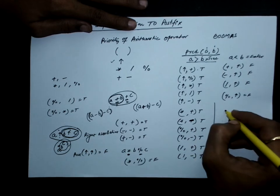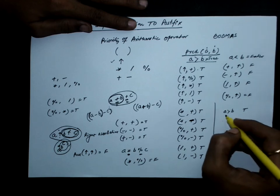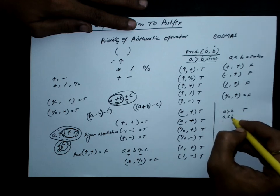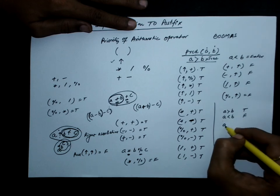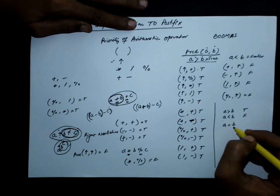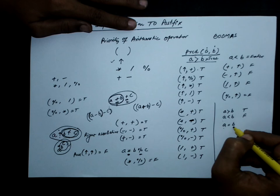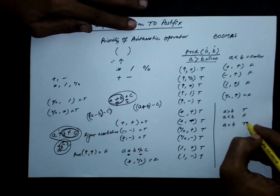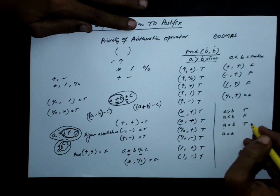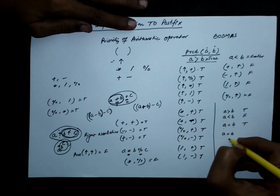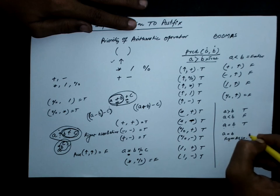To summarize the PRCD function rules: if A has higher precedence than B, it returns true. If A is of lower precedence than B, it returns false. If A and B are of the same precedence and both operators are left-associative, it returns true. If A and B are of the same precedence and the operators are right-associative, it returns false.